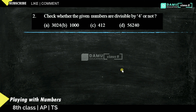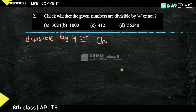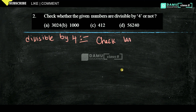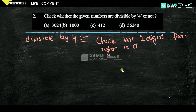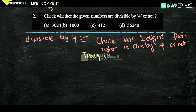Our second question: check whether the given numbers are divisible by 4 or not. The divisibility rule for 4 is that we check the last 2 digits from the right. If the last 2 digits form a number divisible by 4, then the whole number is divisible by 4.